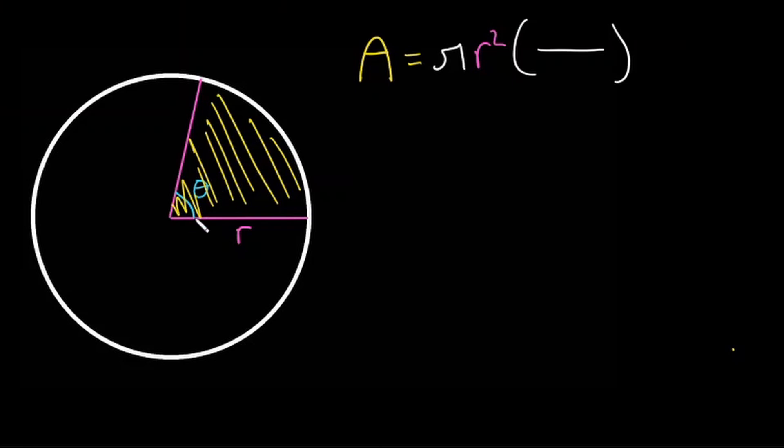So we use our angle theta here. So let's write theta. But what is the whole? If theta is a part, what would be the whole? What would be the angle around the entire circle? And let's write that in degrees. So 360 degrees.